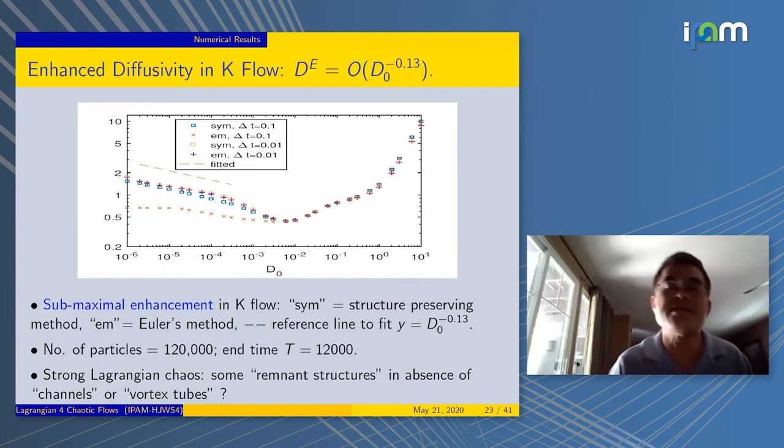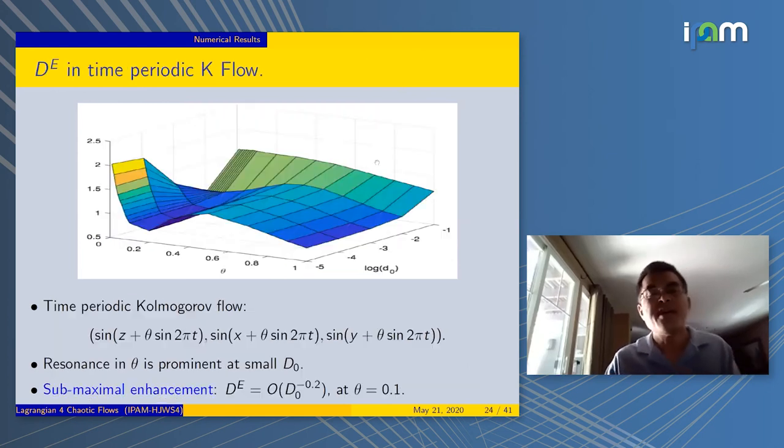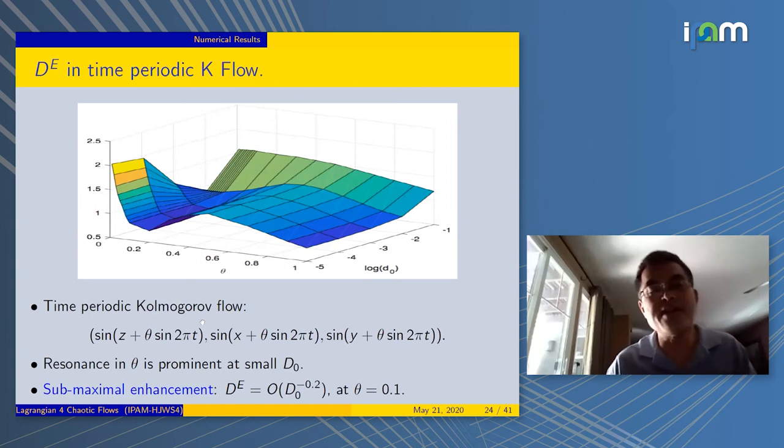This line is flatter. The dynamical reason is, of course, there's no more vortex tube-like structures, and maybe there's some remnant structures so it's not going down to zero exactly. But it's clearly submaximal. There's a clear distinction here, how the effective diffusivity is submaximal. Here's the numerical exponent.